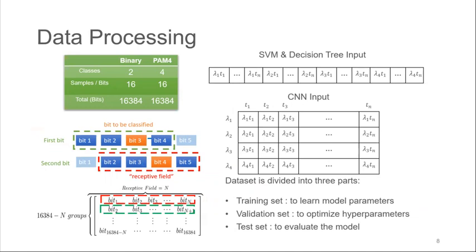For SVM and the decision tree, it requires 1D input. So we concatenate the receptive field from all four channels to form a long vector, just like this. We have the channel 1, channel 2, channel 3, and channel 4. While for the convolutional neural network, since it requires 2D input, we form the data as an image where one dimension is the different wavelength channels and the other is the time domain samples. And the whole dataset is divided into three parts. The training set to learn the model parameters, the validation set to optimize hyperparameters and test sets to evaluate the model.